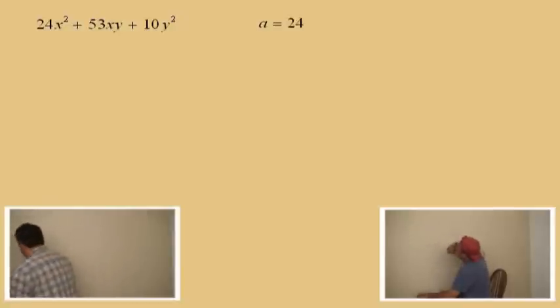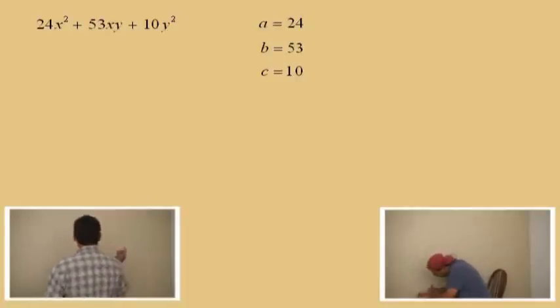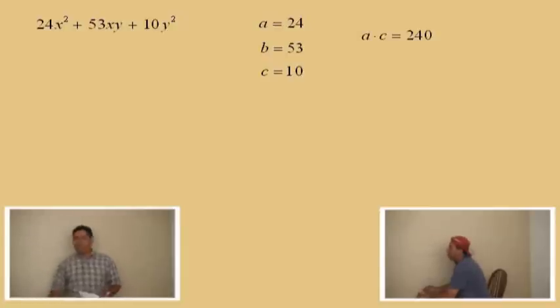Charlie, what's the A term here? 24. Very good. What's the B term? 53. And what's the C term? 10. That's right. Now Charlie, what is the A times C over there? 240. Don't get scared. So what? It's 240.